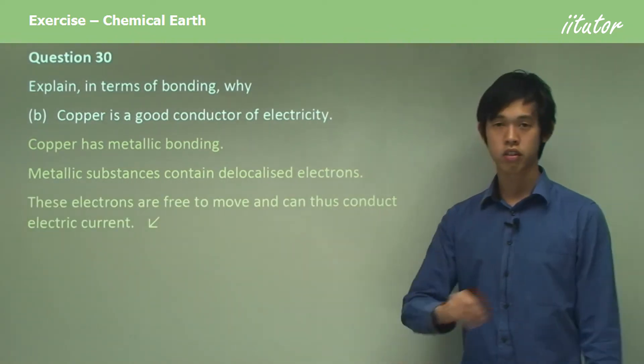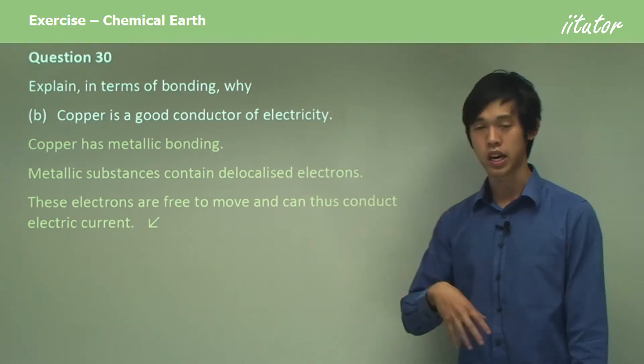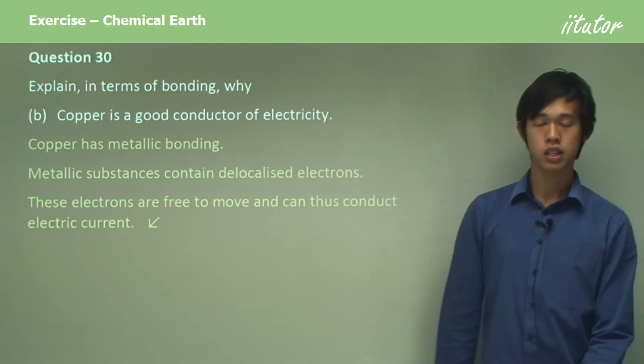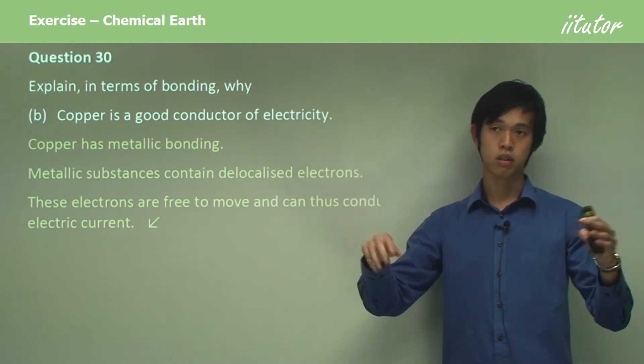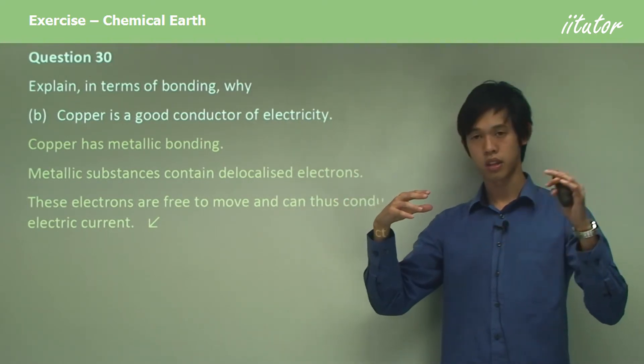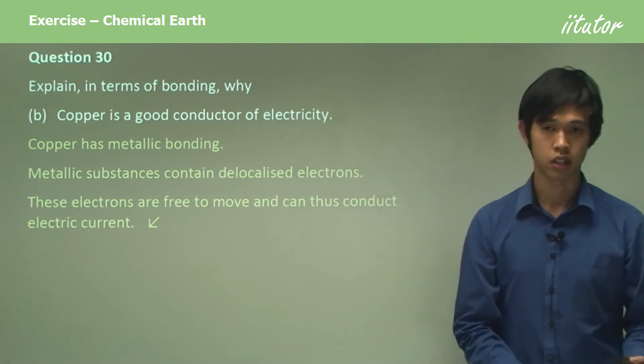These electrons are free to move and can thus carry electrical current. Because each of these electrons is free to move, there are free charges which allow the metal to conduct electricity.